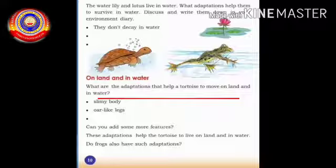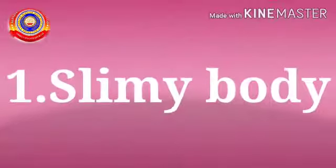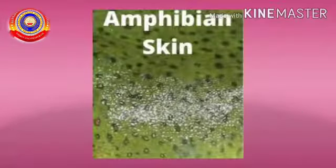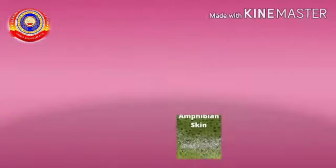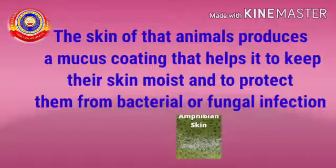The first two points are given in your textbook. What is the first feature? Yes — slimy body. Look here children, here we can see the slimy skin of an amphibian. The skin of amphibians produces a mucus coating — mucus meaning a slimy substance — that helps keep their skin moist, meaning wet.